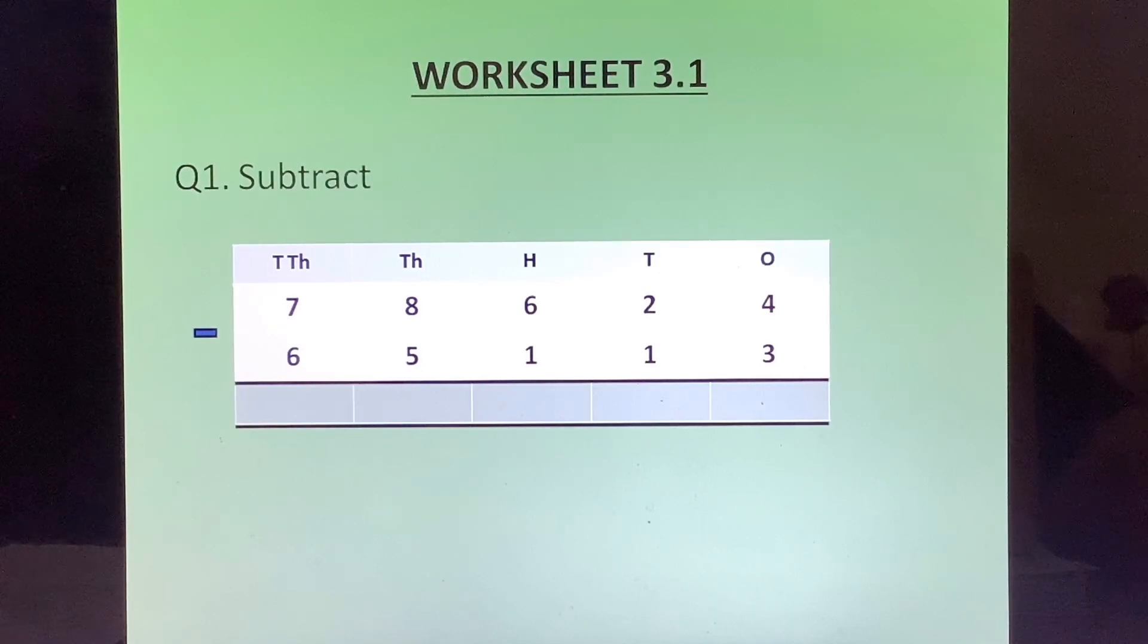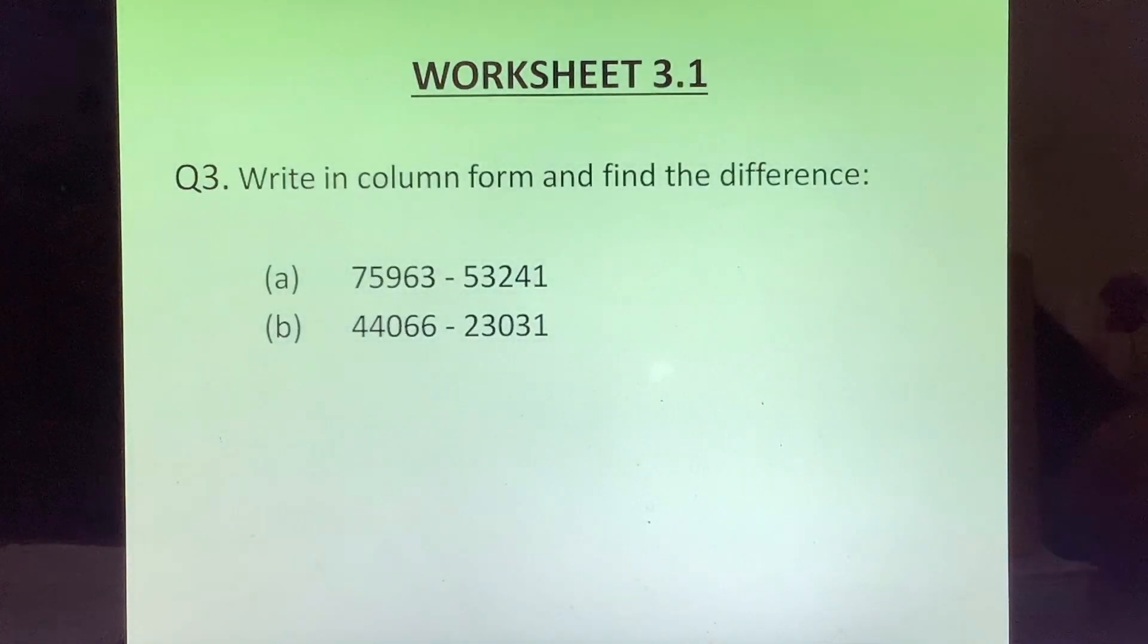Question 1: 78624 minus 65113. Question 2: 87536 minus 74424. Question 3: Write in column form and find the difference. A part: 75963 minus 53241. B: 44066 minus 23031.